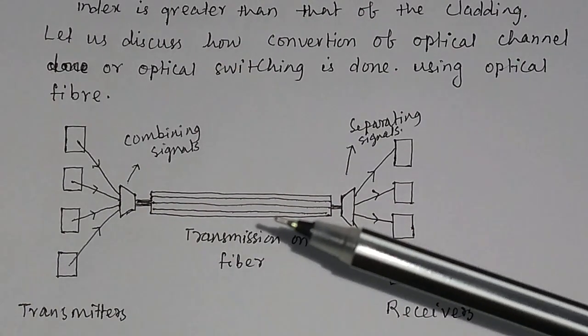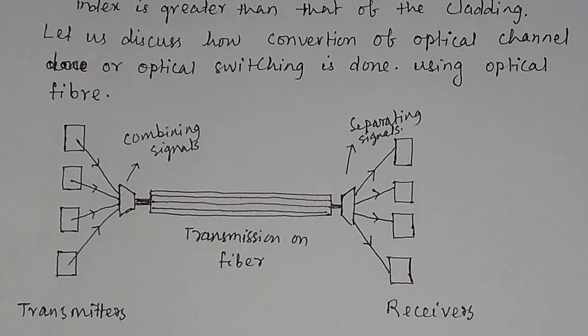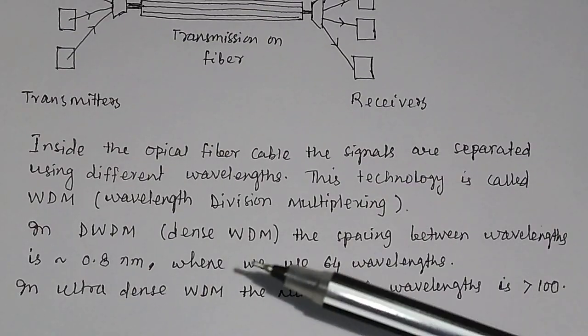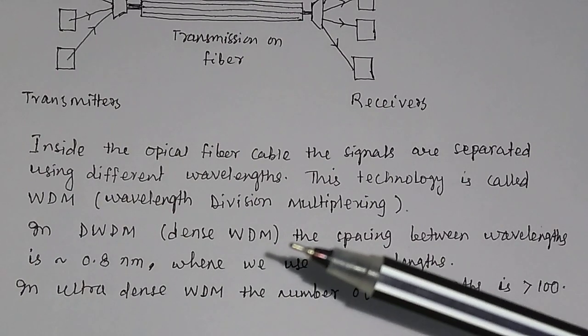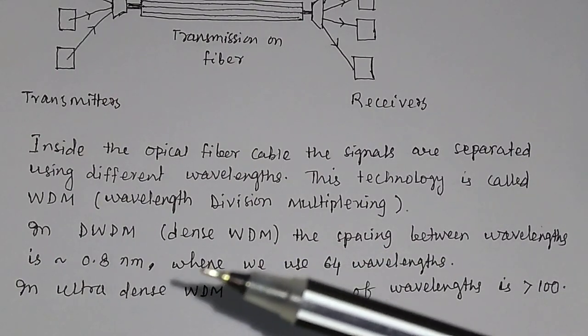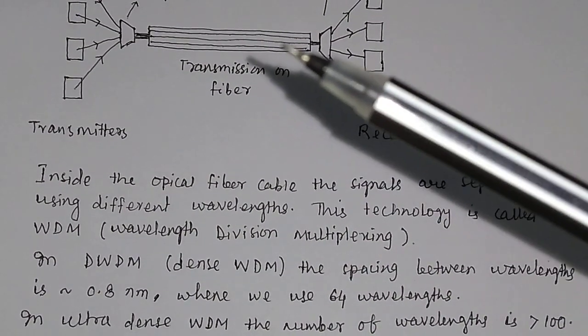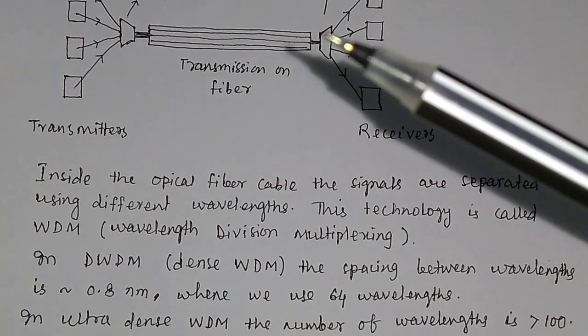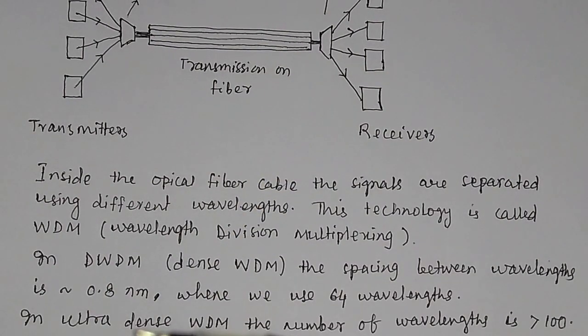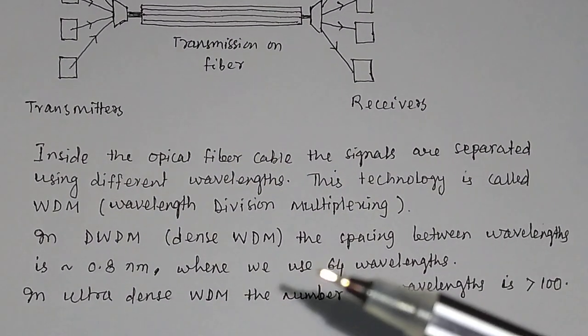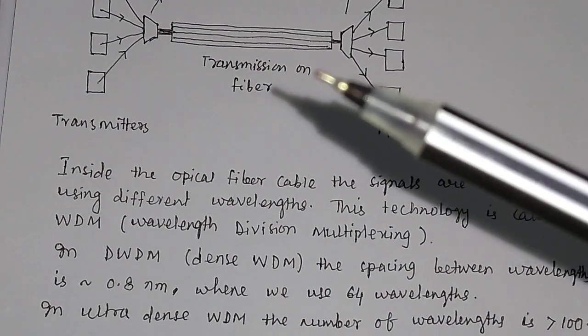This technology is basically called WDM, that is wavelength division multiplexing. In DWDM, that is dense wavelength division multiplexing, the spacing between the wavelengths is of the order of 0.8 nanometer. These are the transmission lines having different wavelengths. The spacing between these transmission lines is basically of the order of 0.8 nanometer, where we use 64 wavelengths. These are 64 lines or electromagnetic waves.